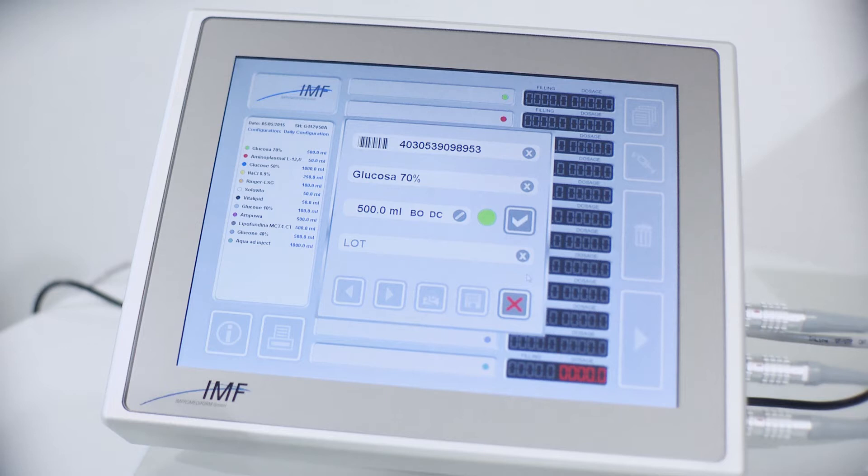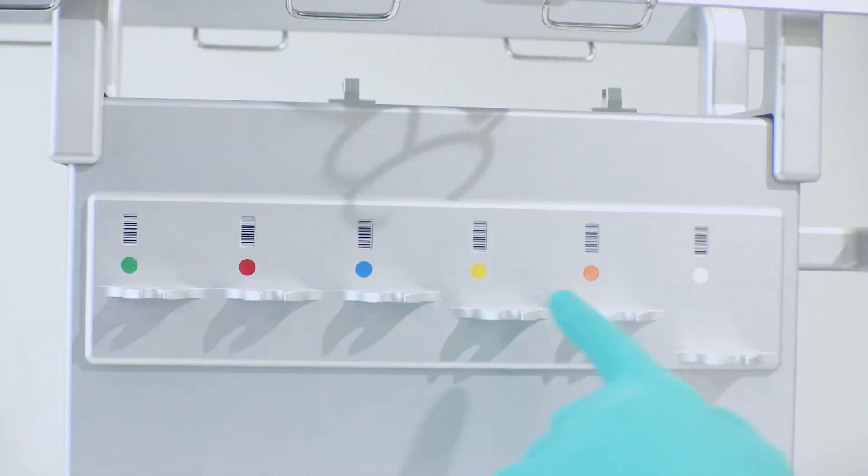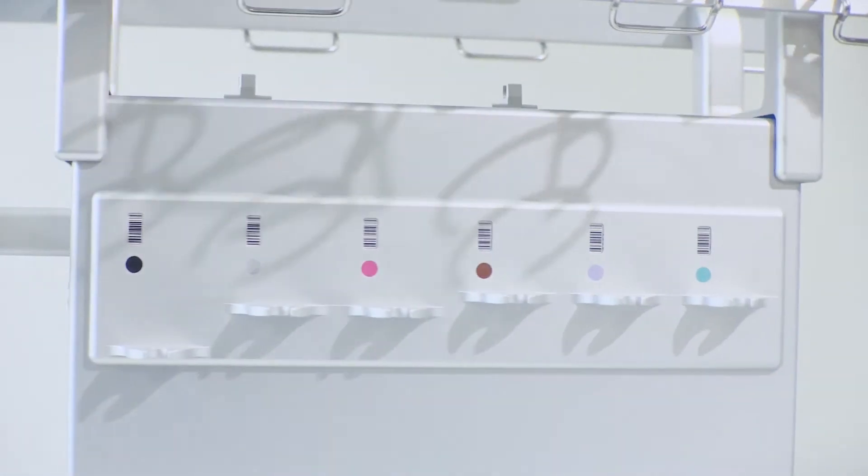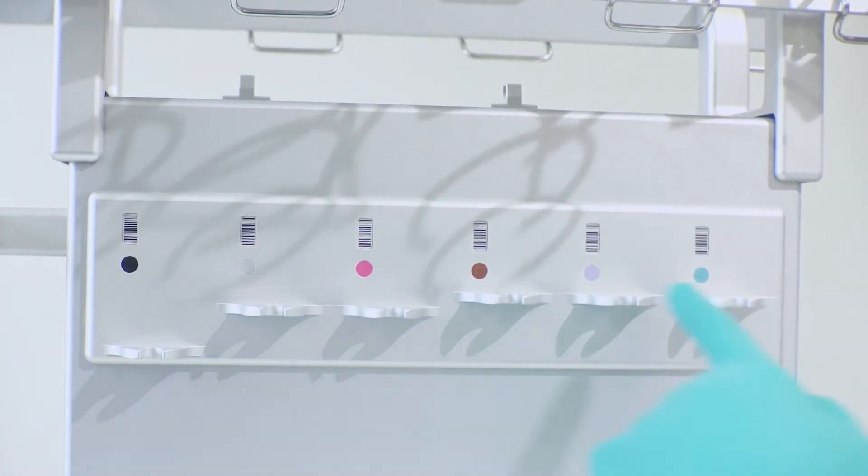Once the configuration is selected the compounder will give all the appropriate information like ingredient name, container size, kind of container and which connector to use. There's also the possibility to type in the lot number. The Medimix compounder will guide the operator to set up the equipment following the color-coded lines, green to white and black to turquoise.